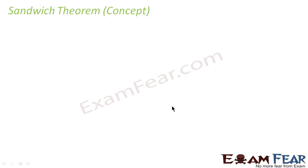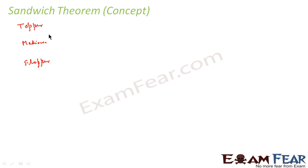Before we start the sandwich theorem, let me build a base for it. Let's take three students: one is a topper, one is mediocre, and the other is a flopper. They all watch examfear videos. The topper watches more videos, so he's the topper; the mediocre watches less; and the flopper hardly watches any. The assumption is: the topper always watches more than the mediocre, and the mediocre always watches more than the flopper.